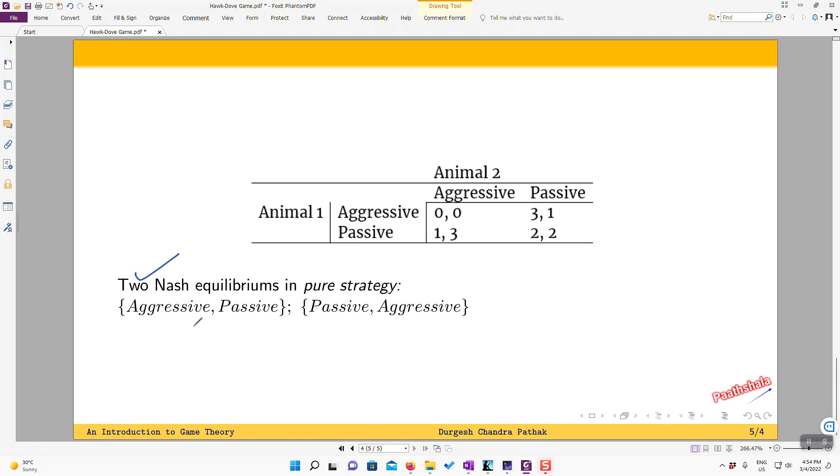So the Nash equilibrium in pure strategy, we have two Nash equilibria. In one, aggressive passive, passive aggressive, means here player one is passive aggressive and player two is passive. Here player one is passive, player two is aggressive.